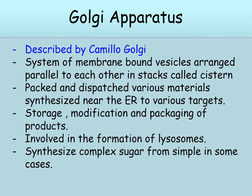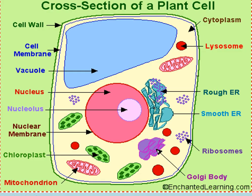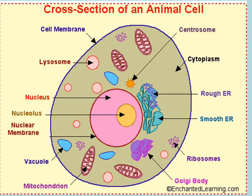The Golgi apparatus is involved in the formation of lysosomes. It synthesizes complex sugars from simple ones in some cases. Here you can see Golgi apparatus in plant cell. Here you can see Golgi apparatus in animal cell.